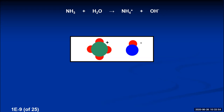In the ammonia-water reaction, ammonia takes a hydrogen from the water, so it's acting as a base. The water is donating its hydrogen ion to ammonia — so the water is acting as an acid. We've now seen two examples: one where water acts as a base (with HCl), and one where water acts as an acid (with ammonia). That means water is an amphoteric substance.